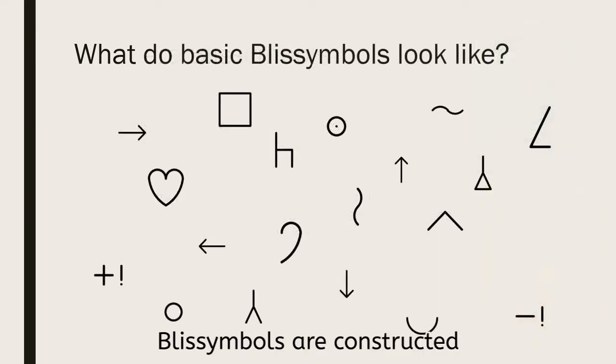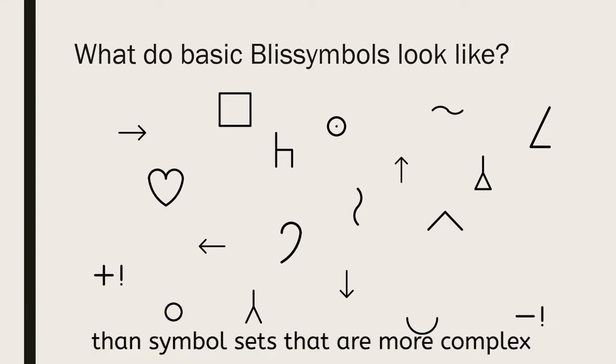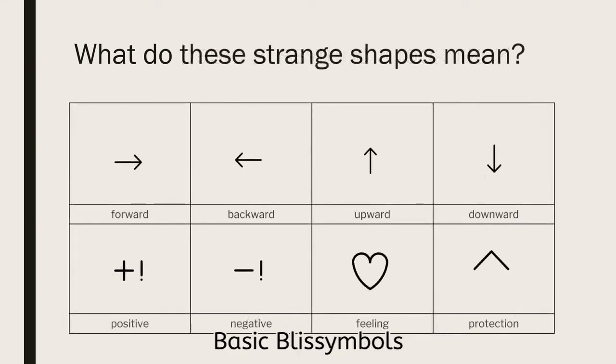Bliss symbols are constructed using a few straight lines and simple curves. As such, they require less cognitive effort to explore and recognize. For tactile learners, this means that the symbols can be processed more quickly and reliably than symbol sets that are more complex in their construction. Basic Bliss symbolics are pictographic in nature—their associated concepts relate easily to their graphic.